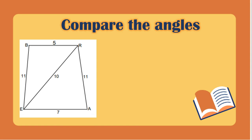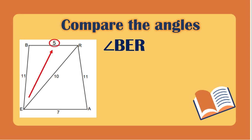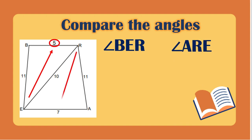Let's have the next one. We have angle BER — the opposite side of angle BER measures 5. And angle ARE, which is the opposite of side EA, measures 7. Comparing these two angles based on the measurement of their opposite sides, we can say that angle BER is less than angle ARE. Those are the inequality theorems for both one triangle and two triangles.